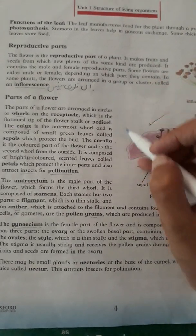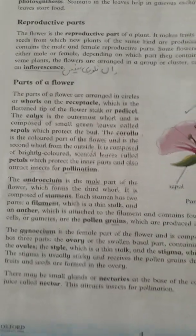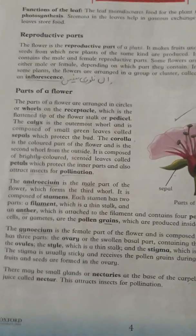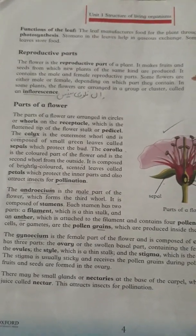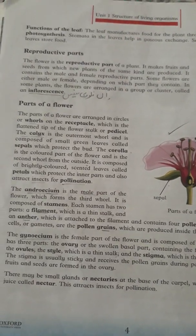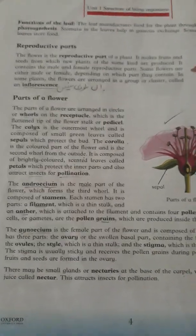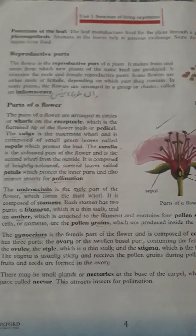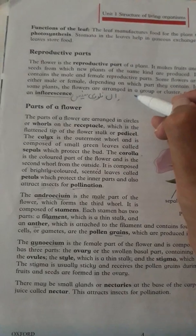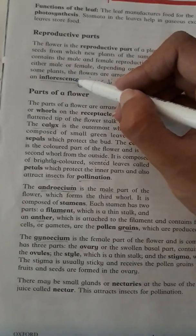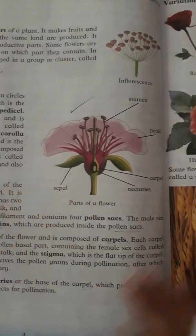In some plants, the flowers are arranged in a group or cluster called inflorescence. Basically, if you have seen that on a stick a bunch or a single flower is attached — if a bunch of flowers is protruding from a single stem, then this phenomenon is called inflorescence. The group of flowers present on the same branch or the same stem is called inflorescence. Look at this diagram — this is a flower.